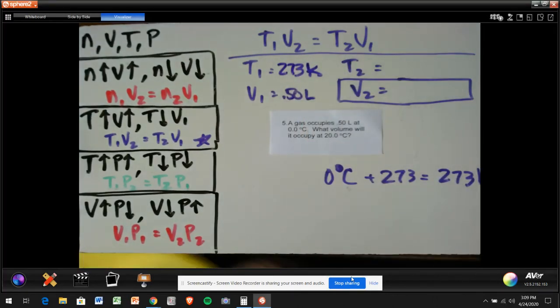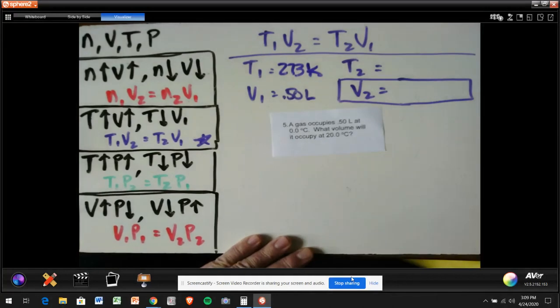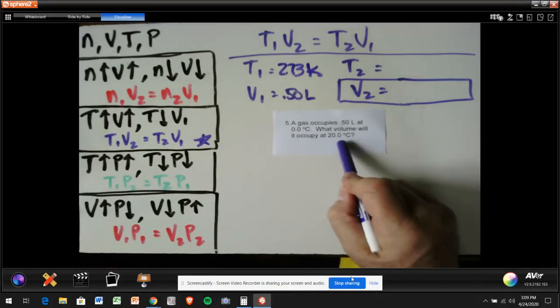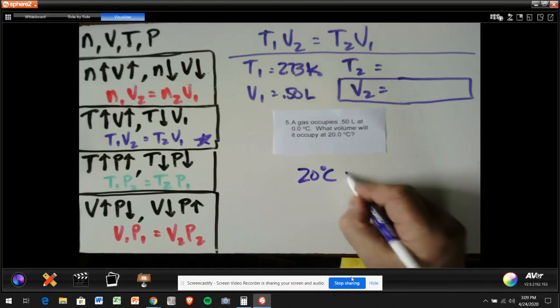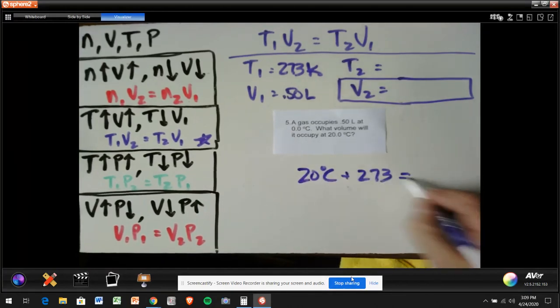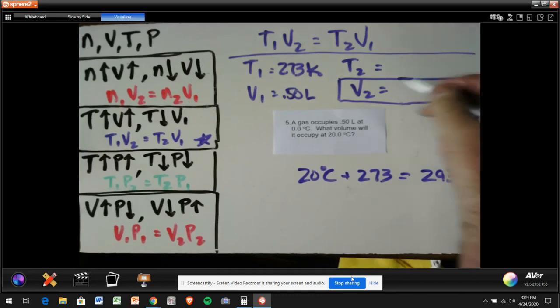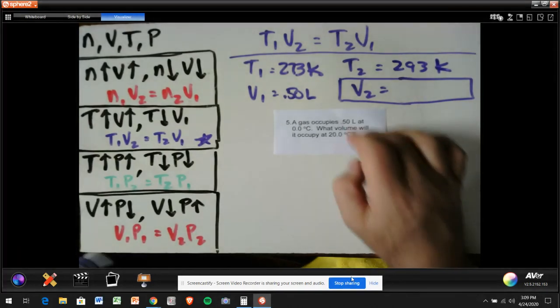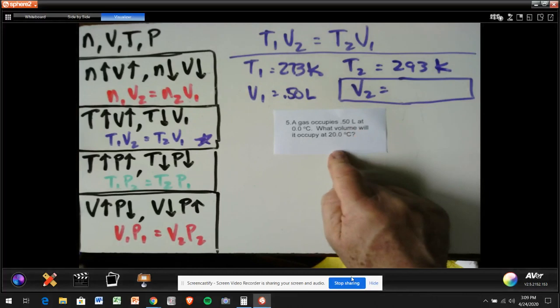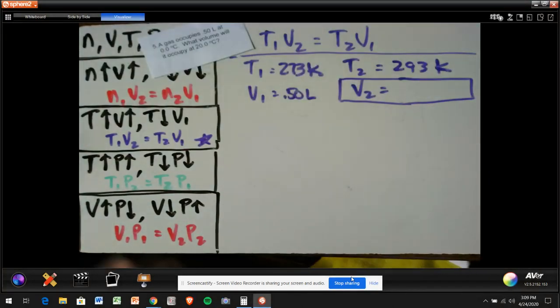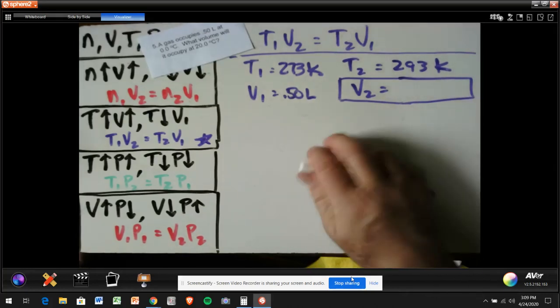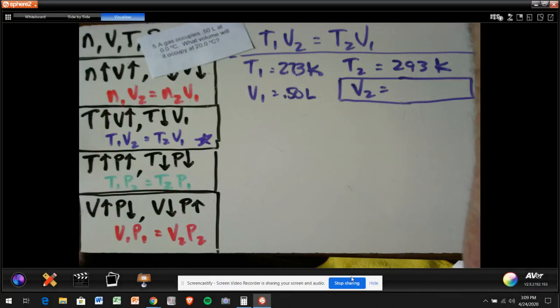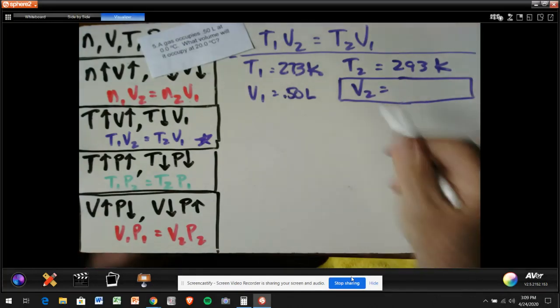And now that I've done that, I don't need my scratch work. What volume will it occupy at 20 degrees Celsius? Well, 20 degrees Celsius plus 273 is 293 Kelvin. So my T2, I'm going to put 293 Kelvin. And then I can get rid of my scratch work. And now that I've done that, I don't really need this anymore. I can take it and put it off to the side. And I know it's there, but if I need to refer to it, I will. But I've got all the information I need. And now I'm going to take that.